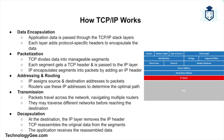TCP/IP operates by breaking down communication tasks into smaller, manageable layers, each responsible for specific functions. First, data encapsulation — data from an application is passed down through the layers of the TCP/IP stack, where it is encapsulated with the necessary protocol headers at each layer. Then packetization — TCP/IP divides the data into smaller segments, adds a TCP header to each segment, and passes them to the IP layer, which then encapsulates these segments into packets adding its own header.